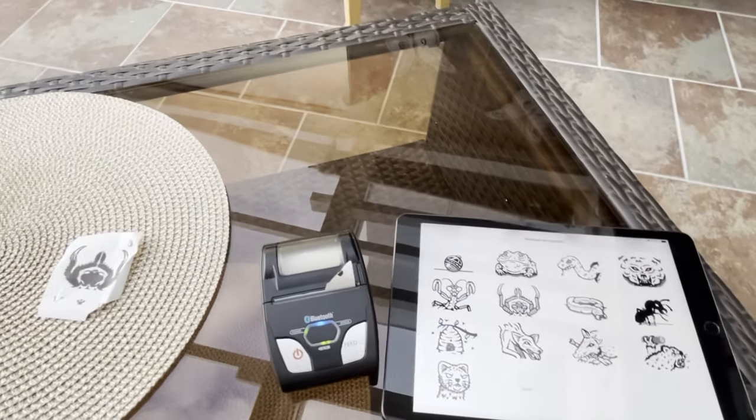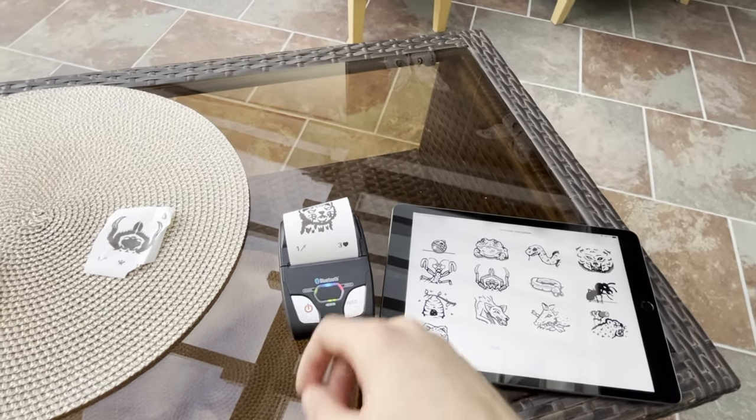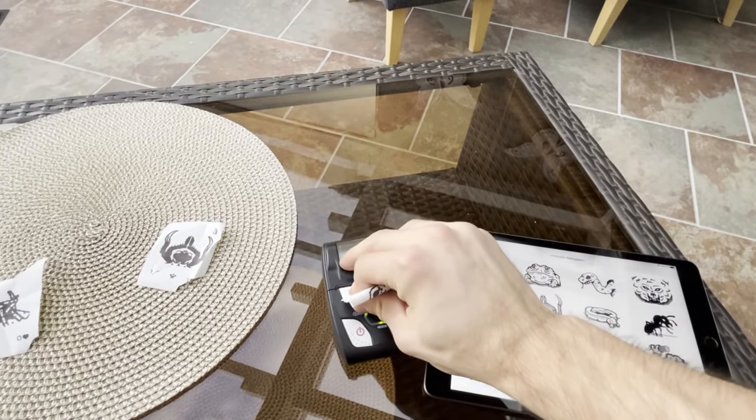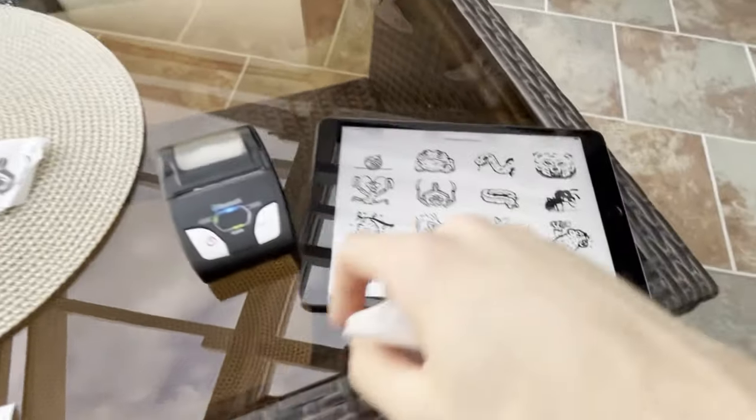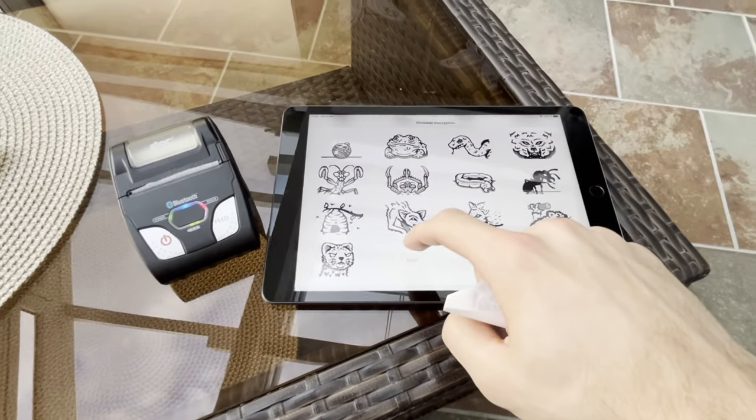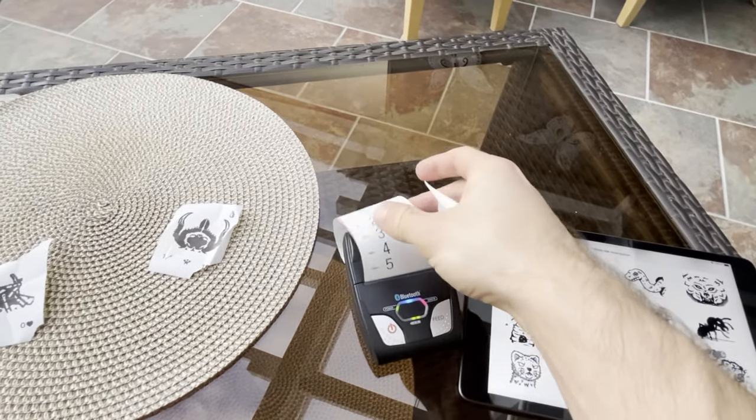And I can print this totem. The scale, it just has a scale button. It just prints like this. Pretty epic.